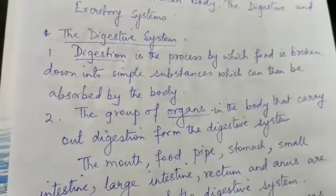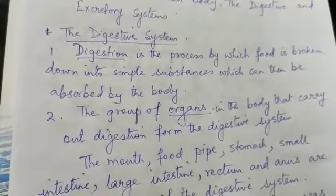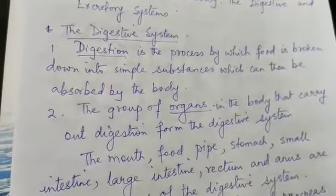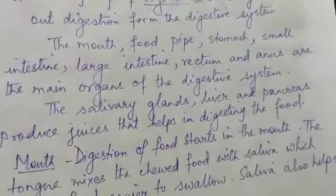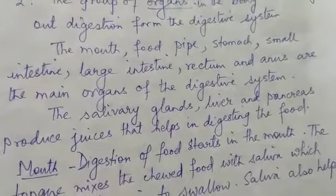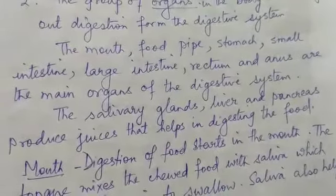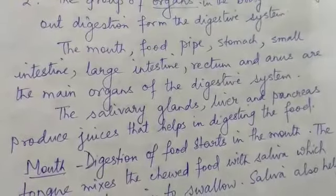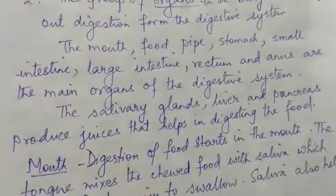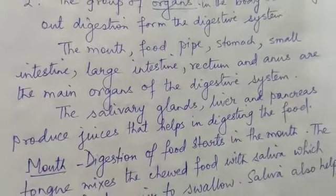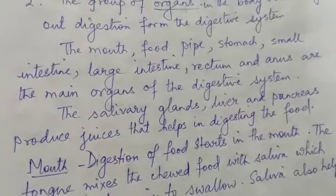The organs that carry out digestion are: the mouth, food pipe, stomach, small intestine, large intestine, rectum and anus. They are the main organs of the digestive system.